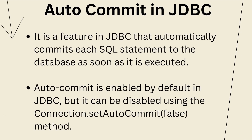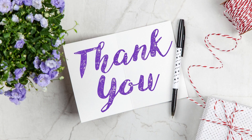The last topic is auto-commit in JDBC. In a database, changes are not permanent until committed. JDBC provides an auto-commit feature so you don't have to explicitly commit each transaction — JDBC handles it automatically. If you want to control commits manually, you can disable auto-commit using connection.setAutoCommit(false). By default, auto-commit is enabled. That's it for this video — if you found the content helpful, please give it a like so it can reach a wider audience. Thank you for watching, keep learning!